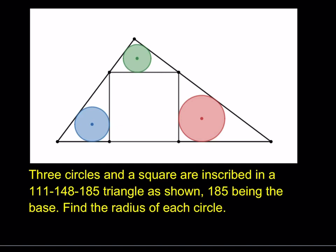Hello everyone. In this video we're going to be solving a geometry puzzle. Three circles and a square are inscribed in a 111, 148, and 185 triangle as shown. 185 being the base, find the radius of each circle.